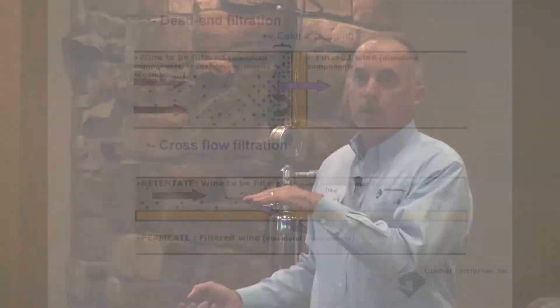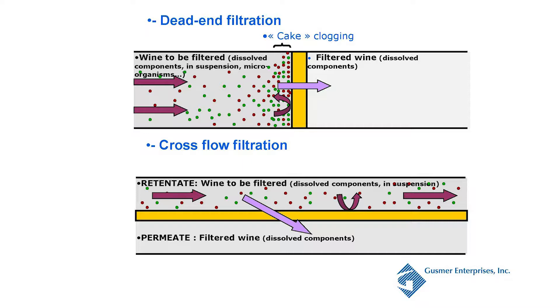Crossflow is just the opposite. We're not going against the filter media — we're going across it. We're running our wine at a parallel system to the filter media, so we are keeping all of these contaminants in suspension; we're not building up a cake. This does a couple of things: it's almost a self-cleaning mechanism, and it's not clogging because we're not building up that cake.